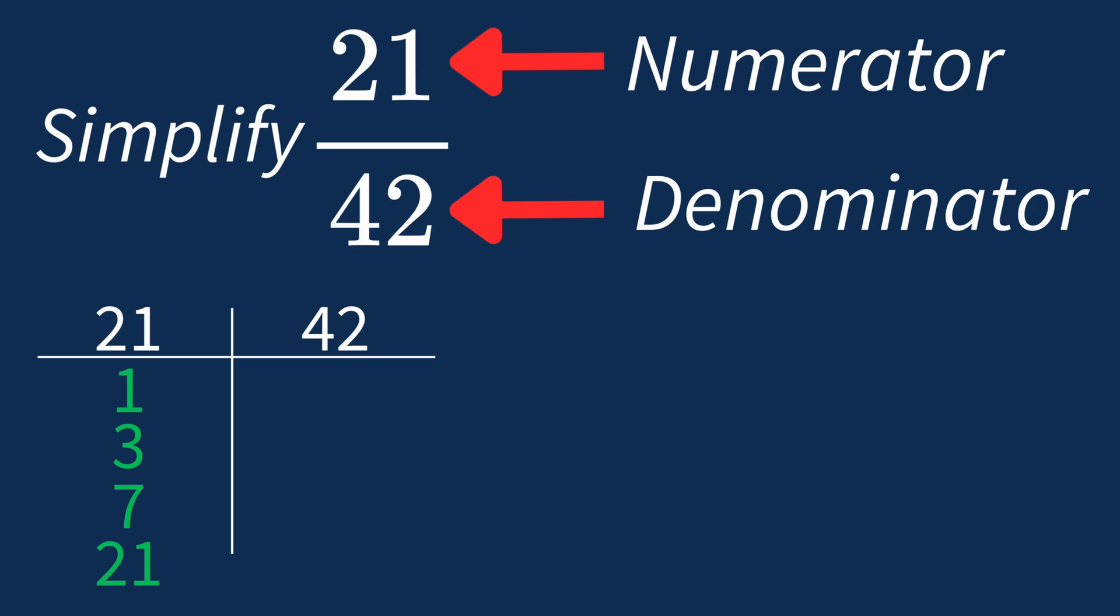For 42, the factors are 1, 2, 3, 6, 7, 14, 21, and 42.